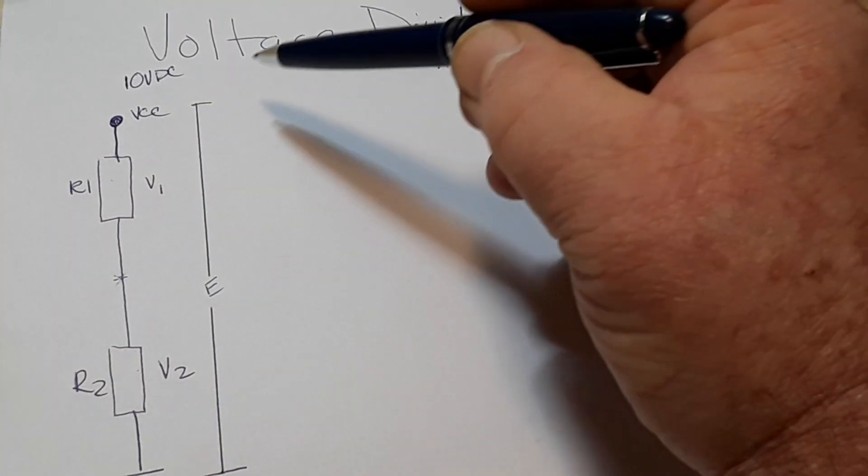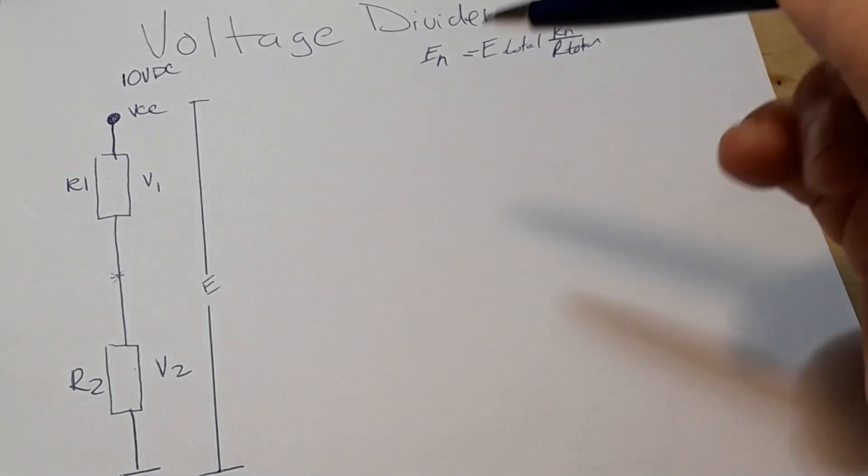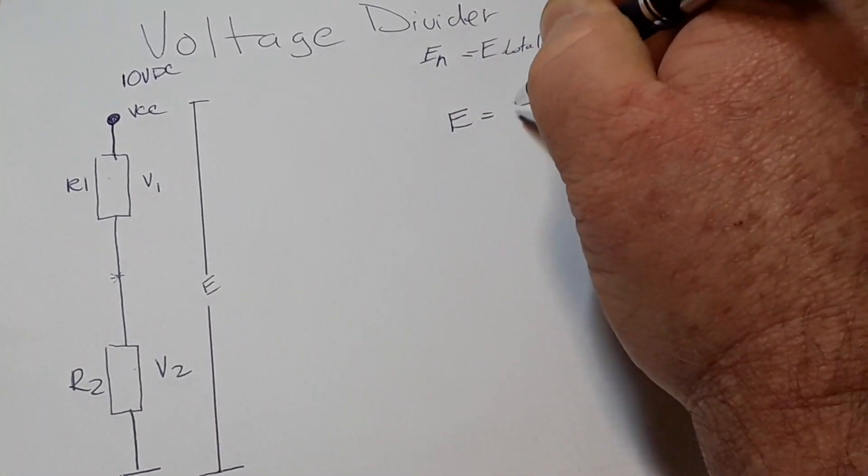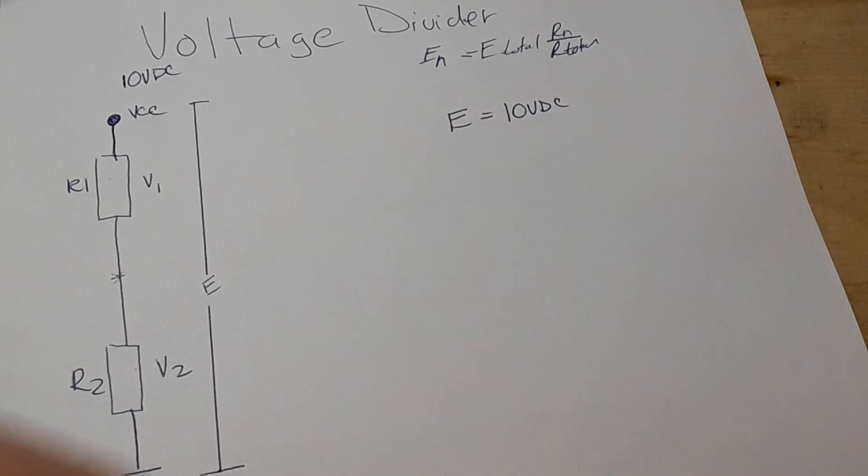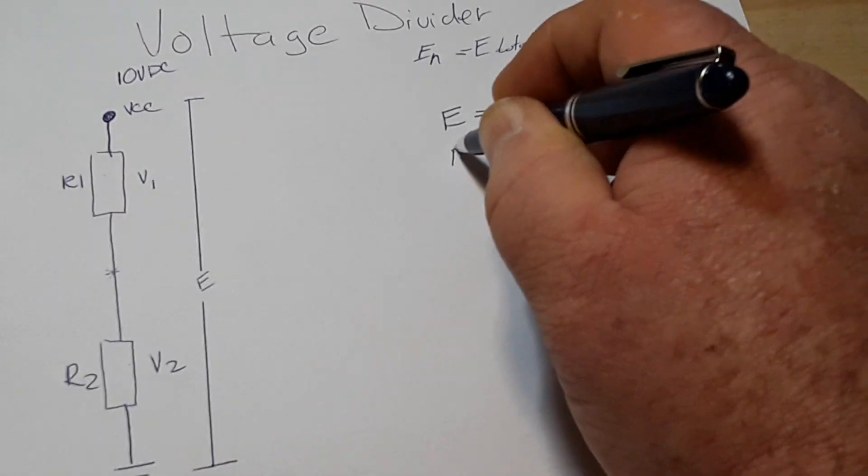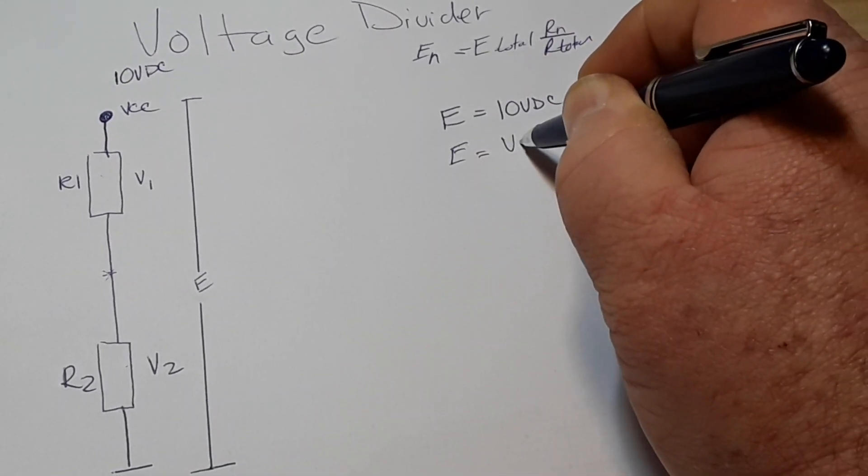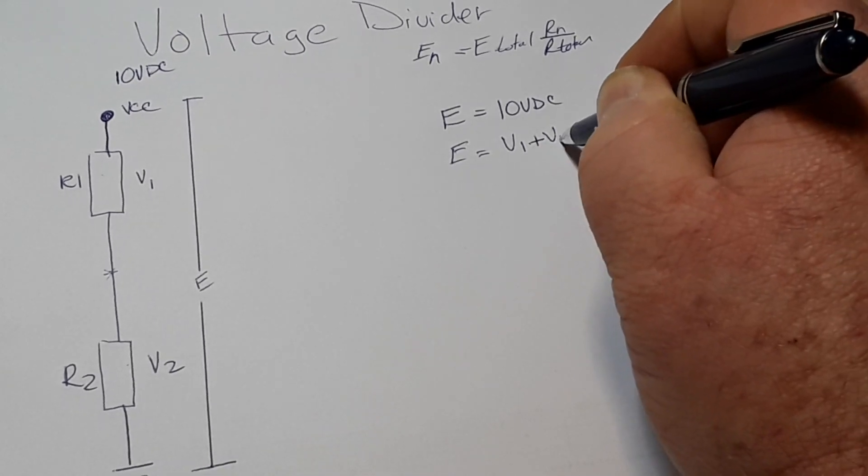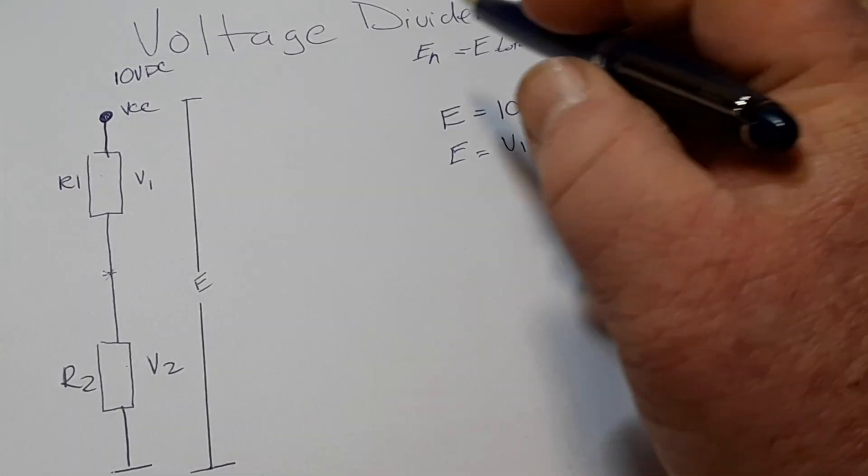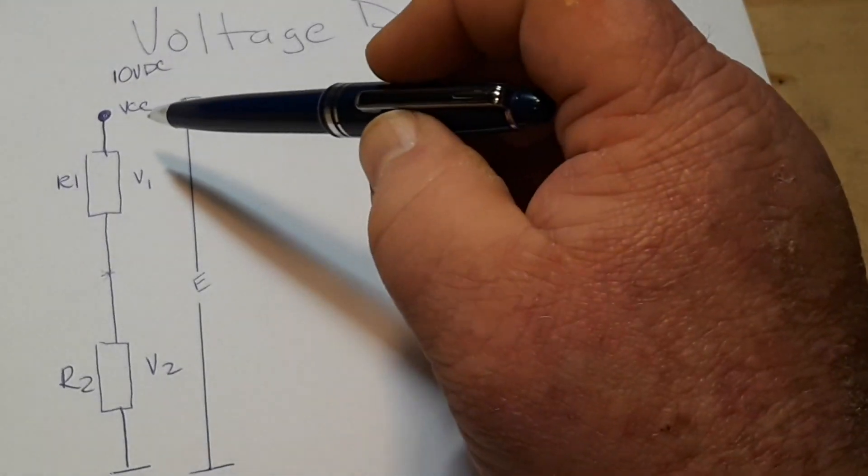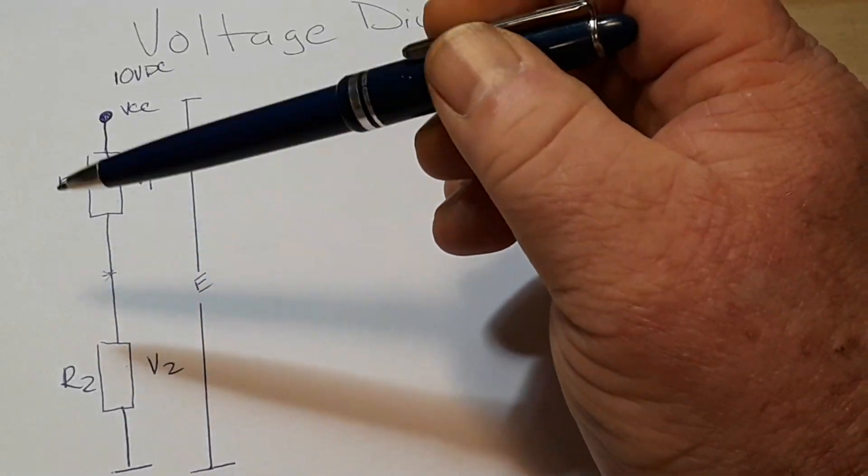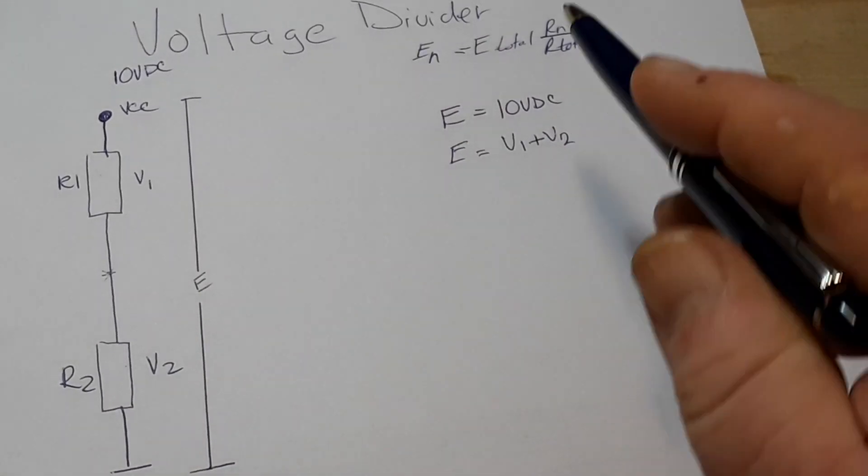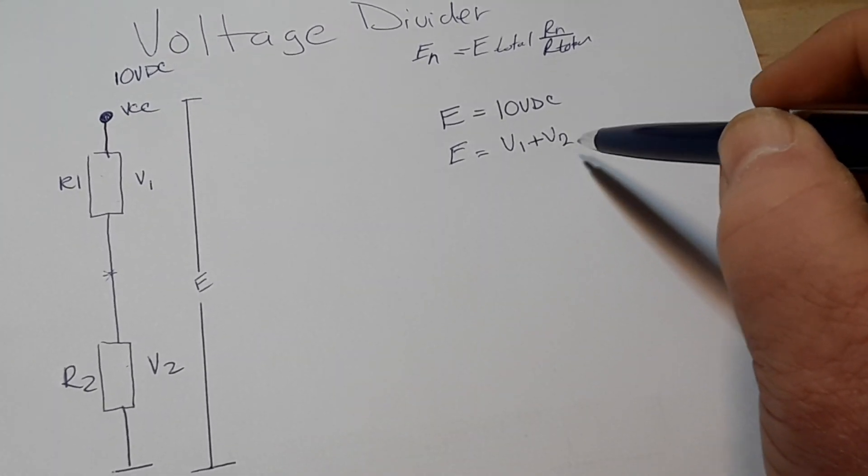So, we know E right now, right? So, E is equal to 10 volts DC. That's the voltage we're feeding into it. So, E is also equal to V1 plus V2. If we knew either the current passing through these or the value of these resistors, then we could figure out E by just knowing those two things.